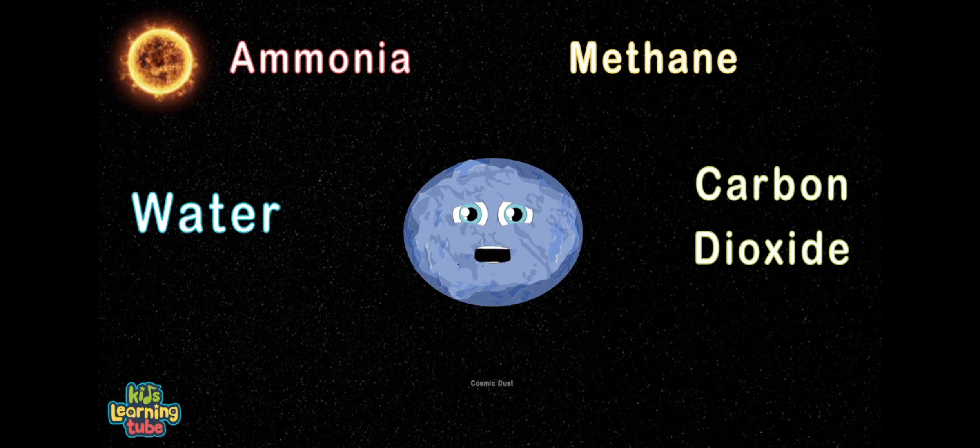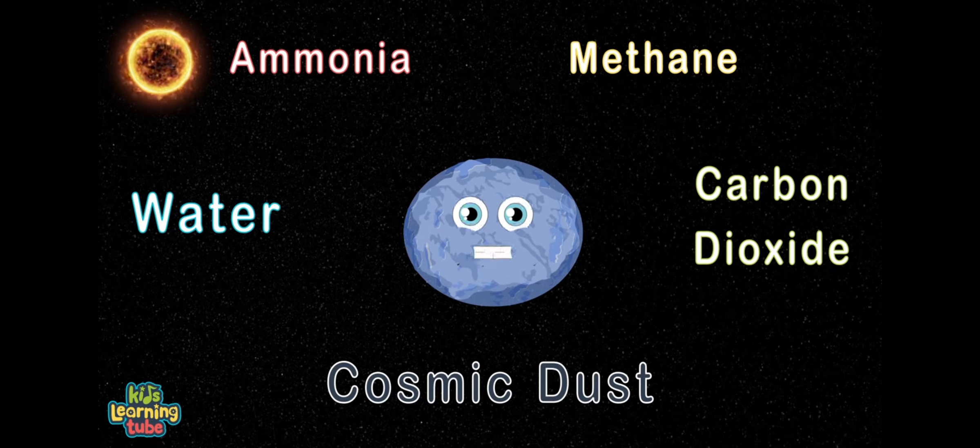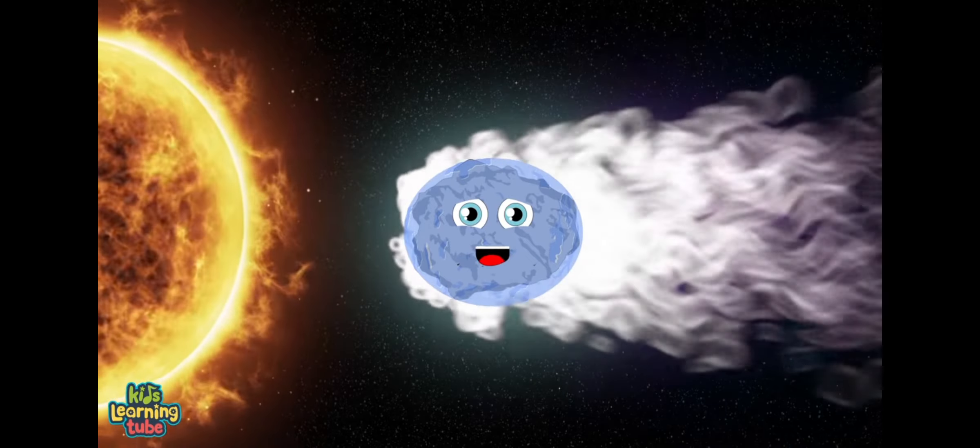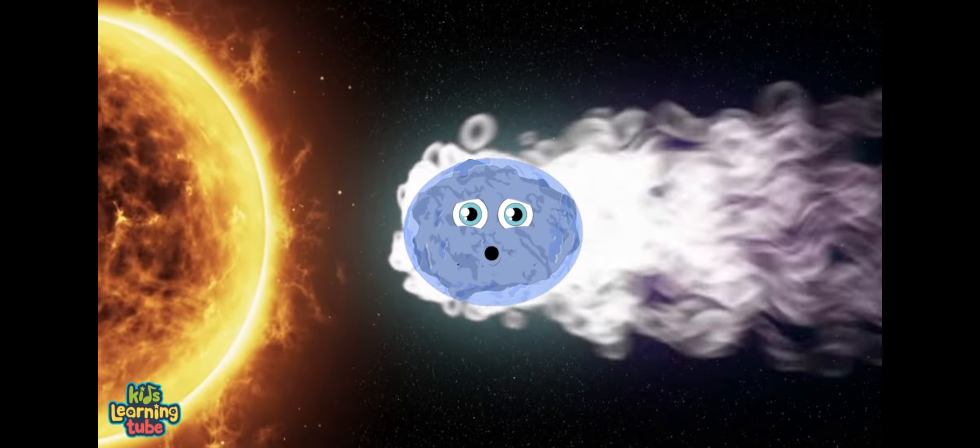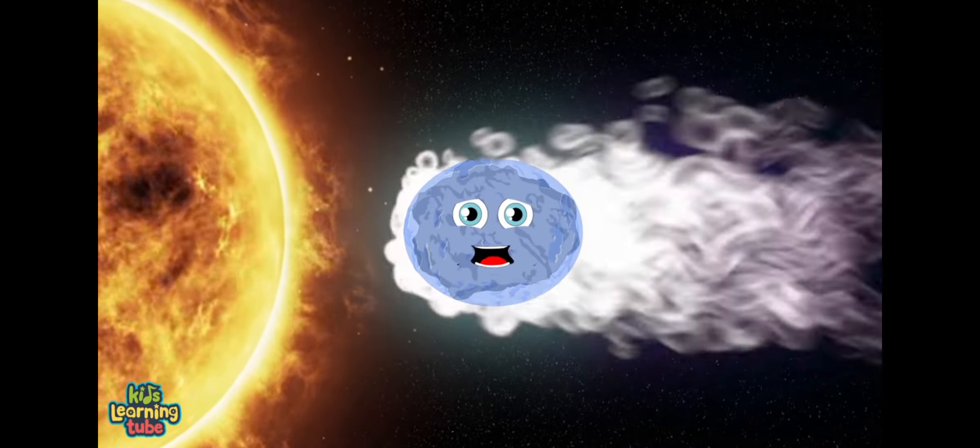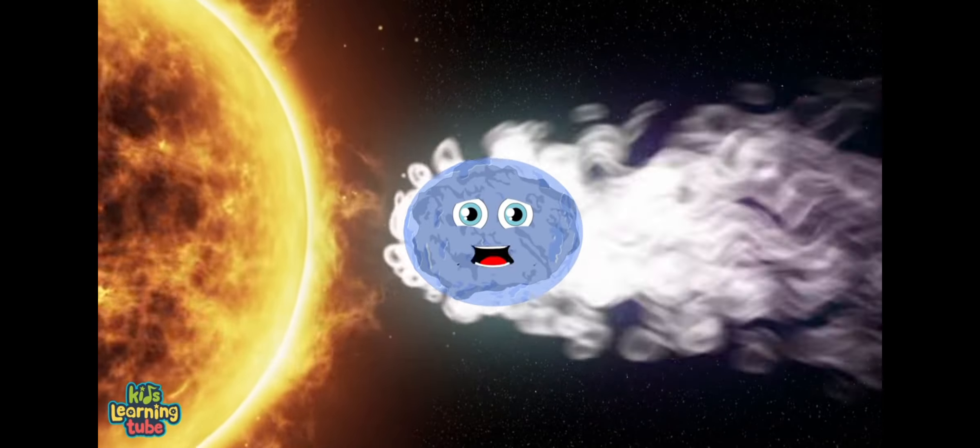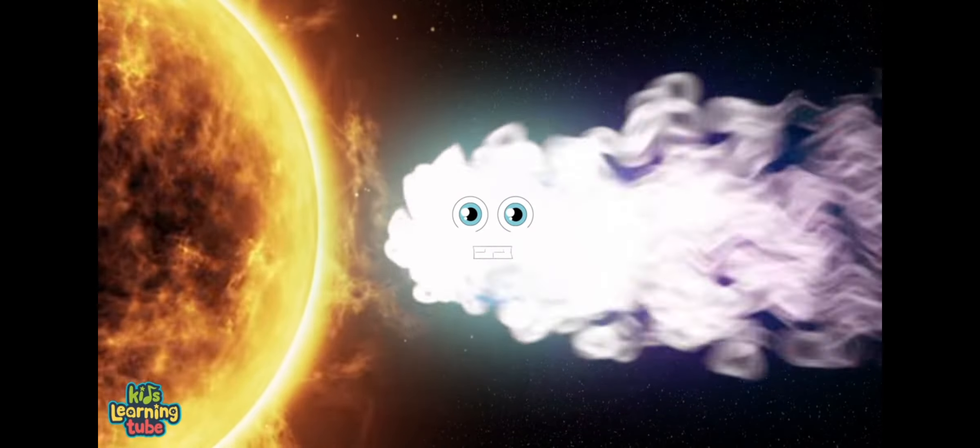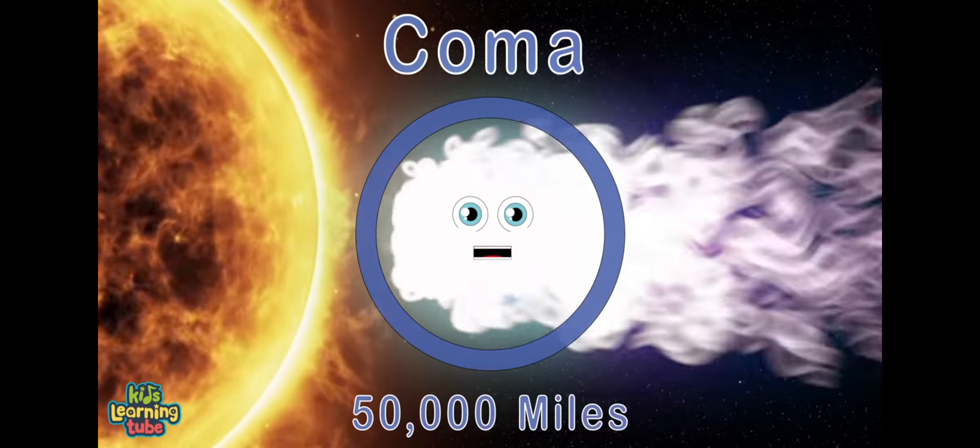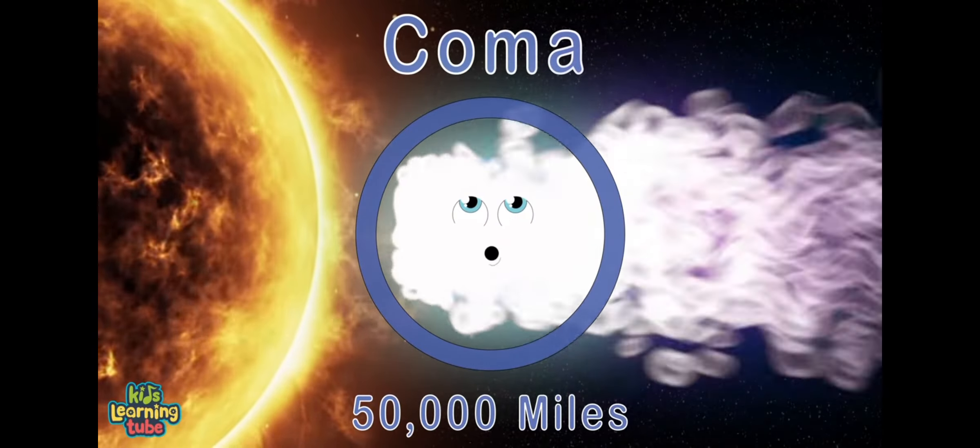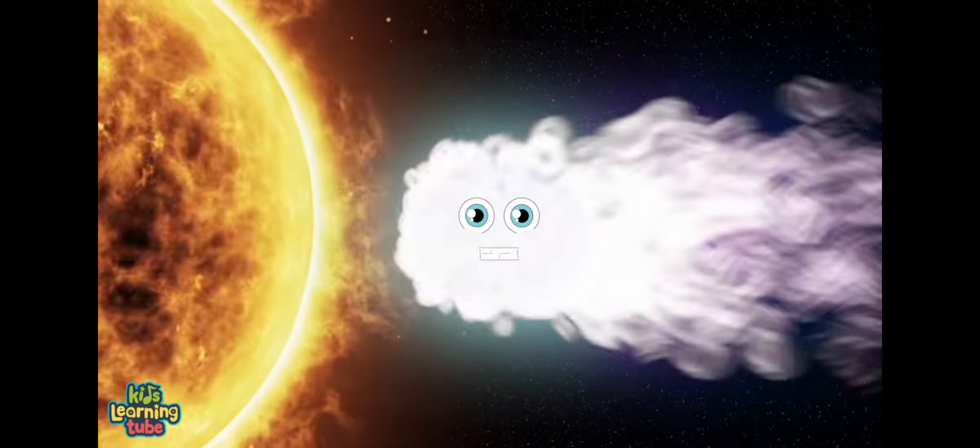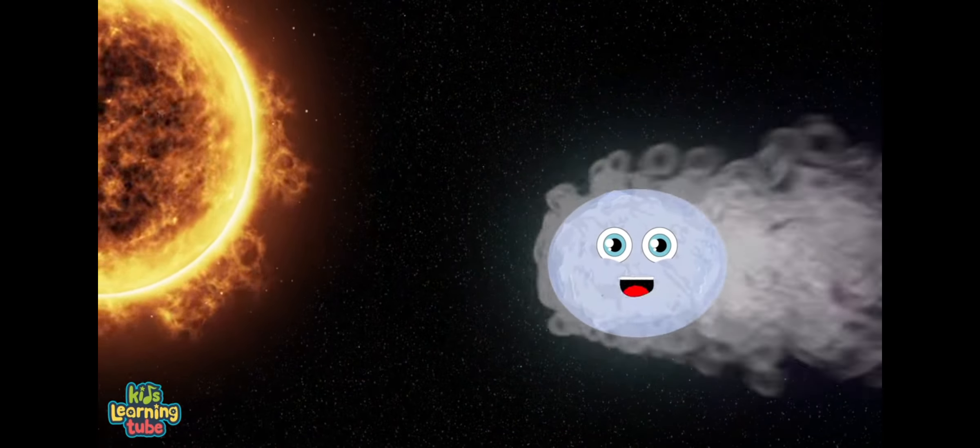When I get close to the sun, I heat up and spew dust and gas. This forms a glowing tail that stretches away from the sun as I pass. A cloud forms around my nucleus from my vaporizing ice. This is called a coma. It can expand 50,000 miles. My tail that formed can expand past 600,000 miles. Thank you for learning about all of us.